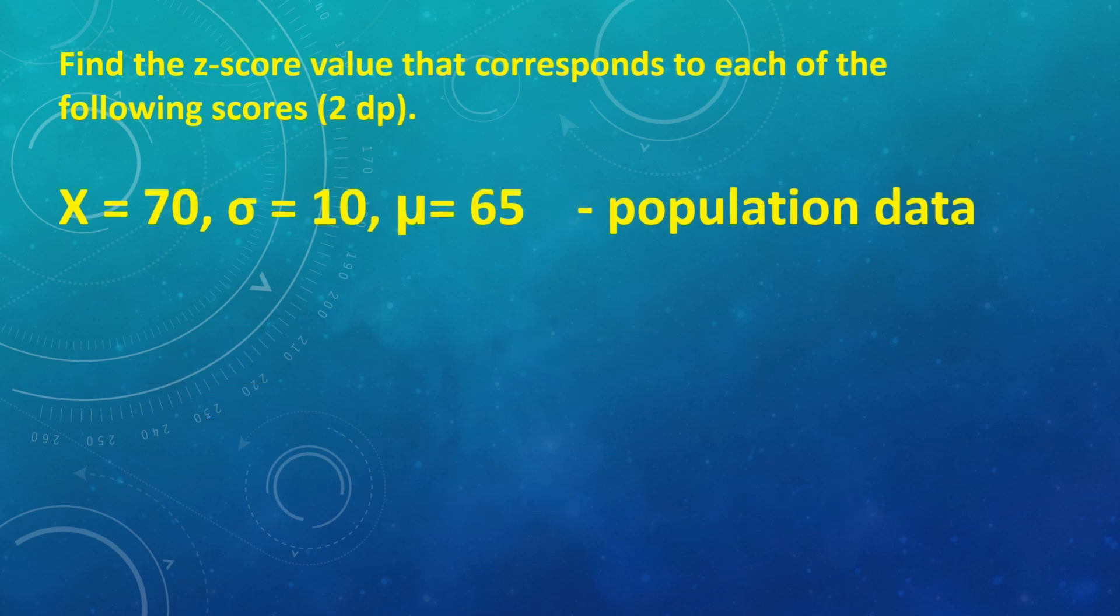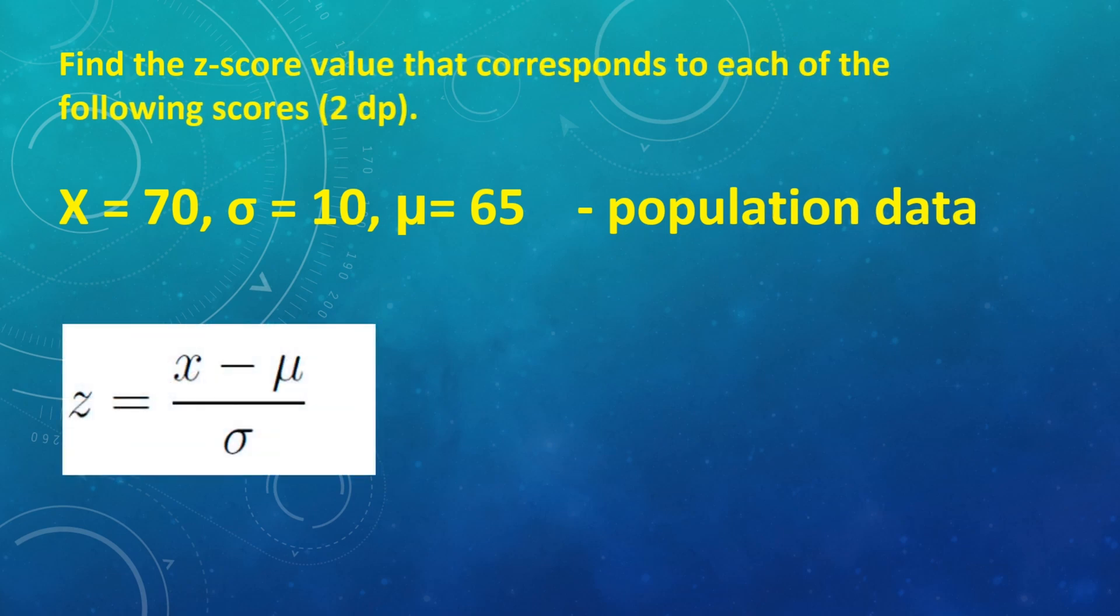Next is population data. So we have here the following given. Then, x equals 70 and the standard deviation of 10 and your mean is 65. Using the z-score formula, you're going to substitute the given, manipulate, and you have the z-score equals 0.5.